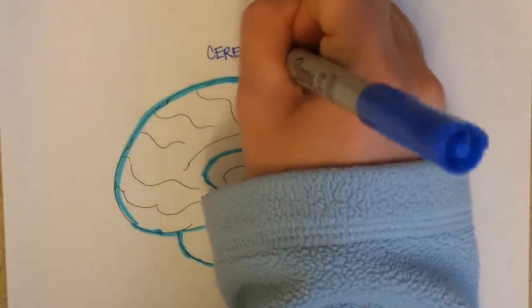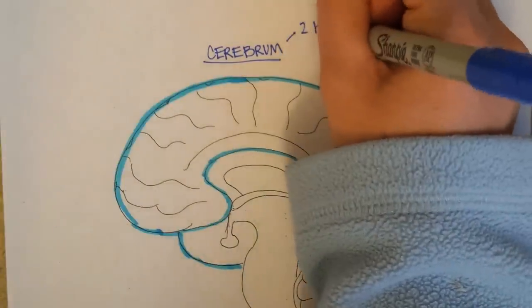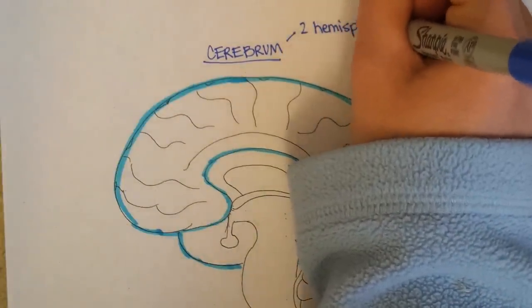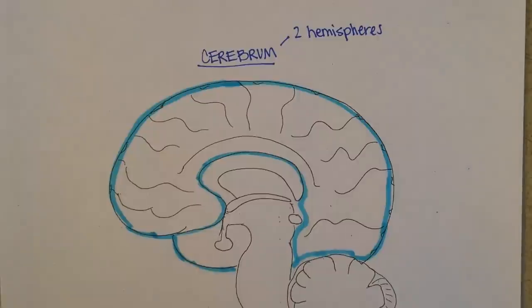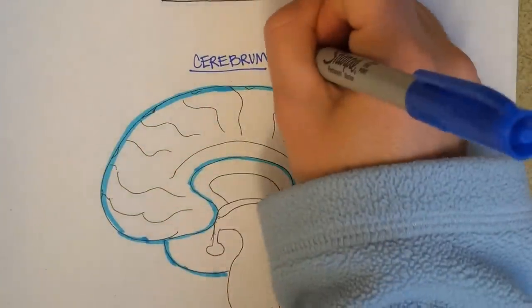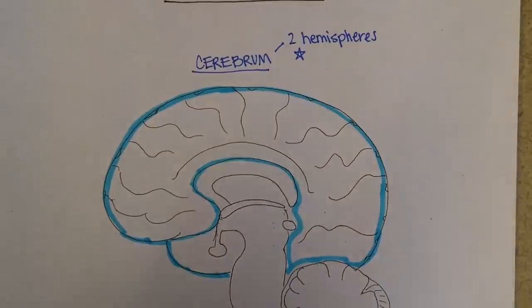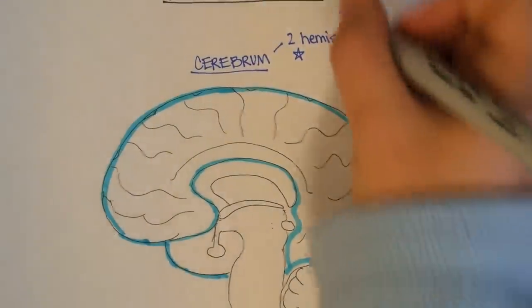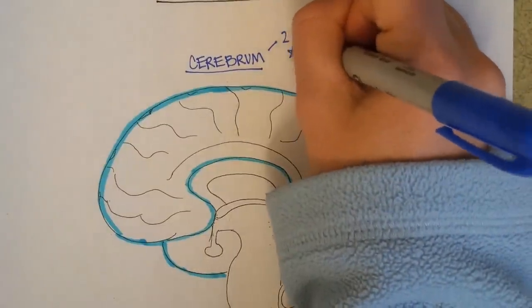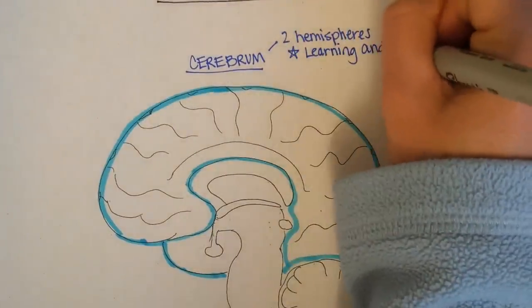There's a region of the brain called the cerebrum, and it's composed of two hemispheres. They're separated by dura mater, which is a really tough connective tissue. The cerebrum is responsible for most of the things you think about when you think, what does my brain do? For example, learning and memory.